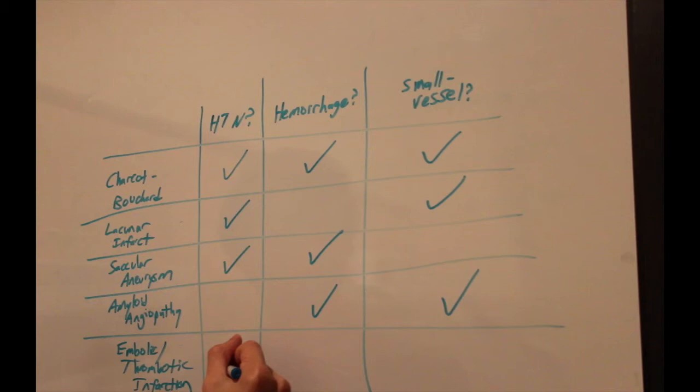One big point to make is that amyloid angiopathy is the most common cause of lobar hemorrhage. If they put that in the question stem, you really want to consider amyloid angiopathy.